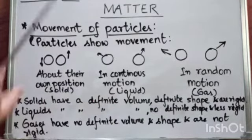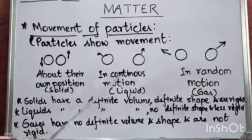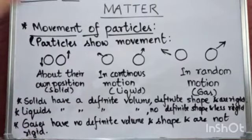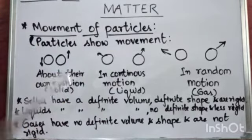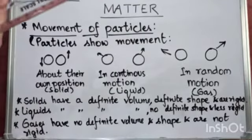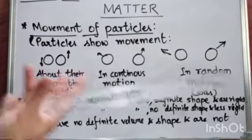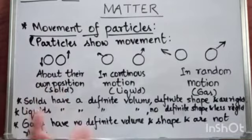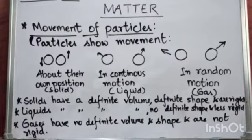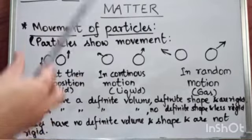So depending upon the arrangement of particles in different states of matter, they have different volume, shape, and their rigidity is also different. In solids, we can say that they have a definite volume, definite shape, and they are rigid.